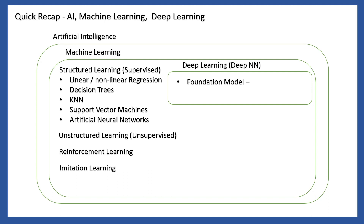Foundation models are useful for language translation, computer vision, image generation, and scalable models. Large language models are a type of foundational model. Generative AI uses language models and neural networks, and new generative AI models can generate content from their own knowledge base.